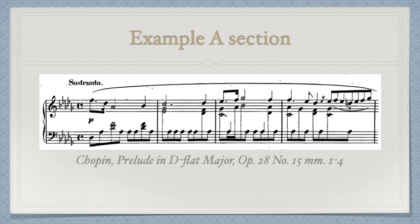The following slides are an example of simple ternary by Chopin. In his Prelude in Db major, he begins sweetly with a flowing melody in Db major. Here are the first few bars. This A section maintains this character and key throughout until it closes on an imperfect authentic cadence in Db some number of measures later.